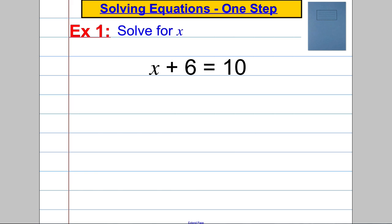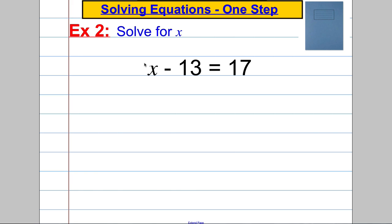Example 2. x subtract 13 is equal to 17. So let's think what happened to x over here. What happened to x is that you subtracted 13. To undo that, the opposite of that, to find your x back, you must have to add 13. So what I'm going to do to both sides is I'm going to add 13 onto both sides as follows.